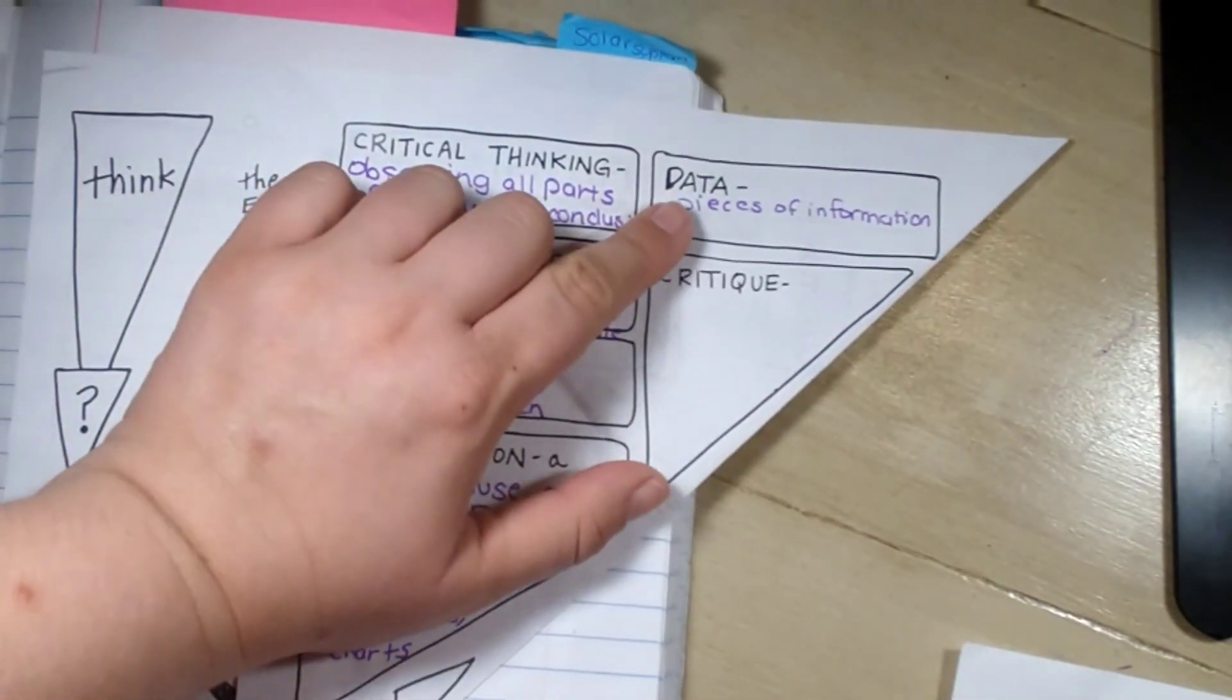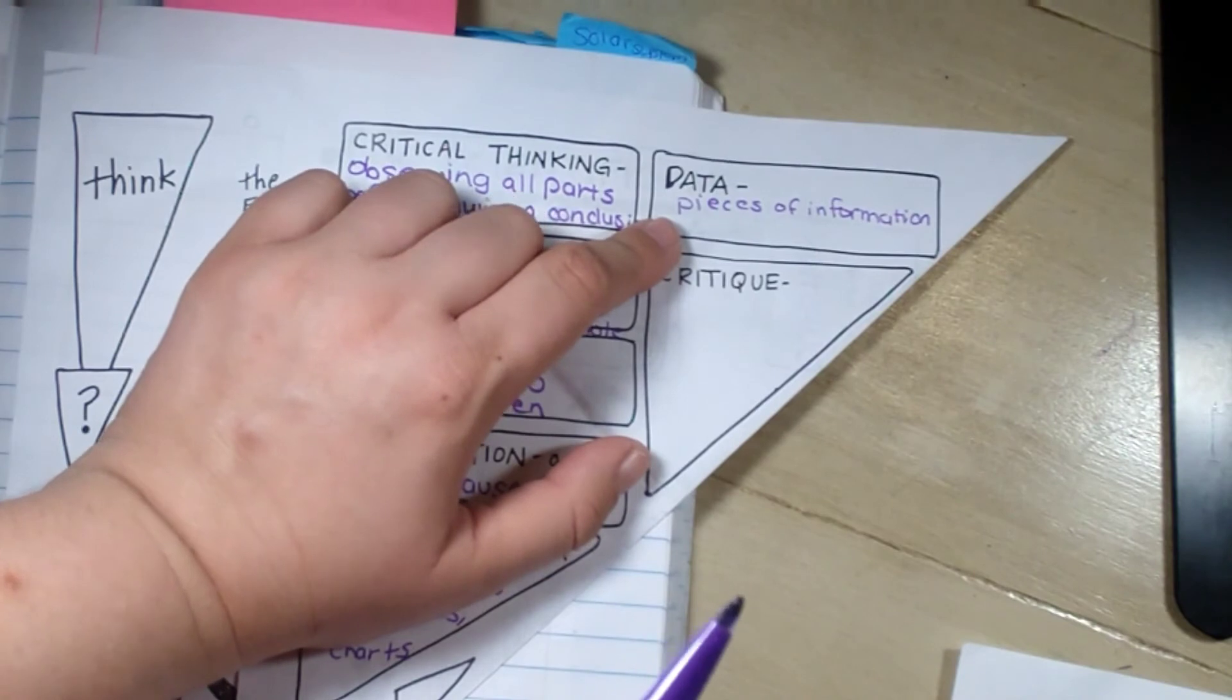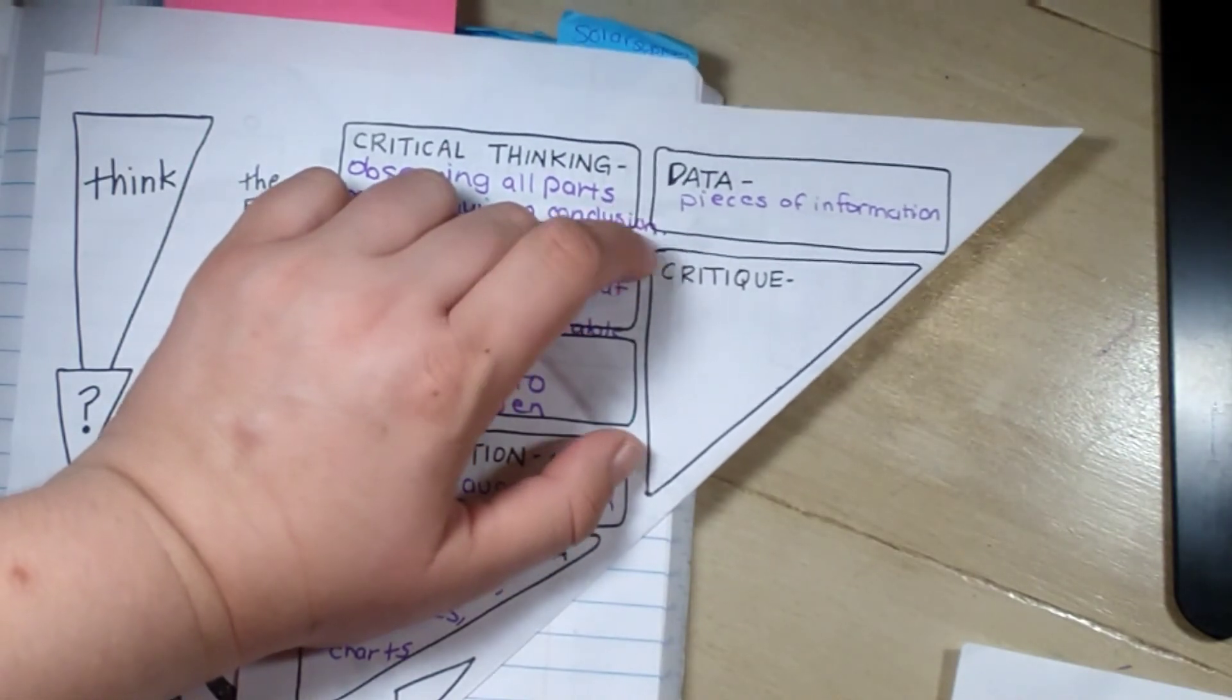My independent variable that I want to test is going to be my kinds of soil. The data that I want to collect, which is my dependent variable, is going to be how tall my plant grows. So that's the information I'm going to collect.